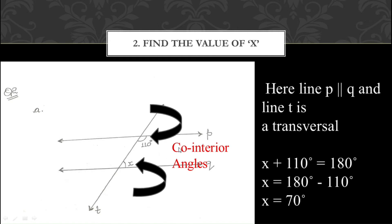So here the equation becomes: X + 110° = 180°. When you shift 110 to the other side, it becomes minus 110°. Subtracting gives X = 70°. We used the property that the sum of co-interior angles is equal to 180 degrees. So the value of X in part A is 70 degrees.